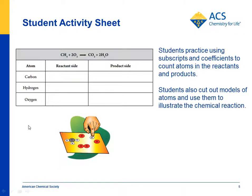On the activity sheet, students are given paper models of atoms for hydrogen, carbon, and oxygen. They can cut them out and use them to actually form the equation themselves, proving that the atoms in the reactants come apart and can be rearranged to make the products. Students can see how many of each atom there is on the reactant side — one carbon, four hydrogen, and four oxygen. This equation gives a good opportunity for kids to grapple with subscripts and coefficients, learning that the coefficient applies to the entire molecule and the subscript only applies to the atom it's connected with.